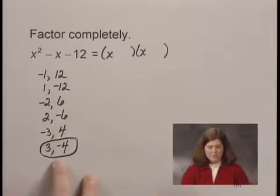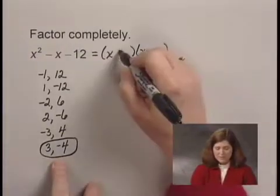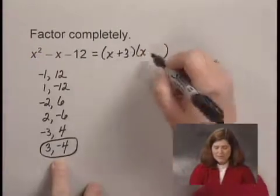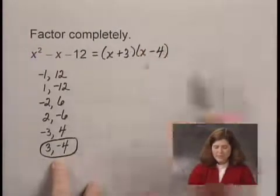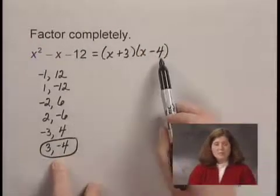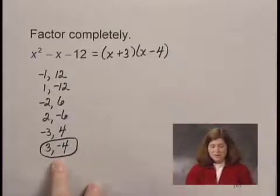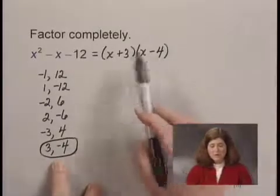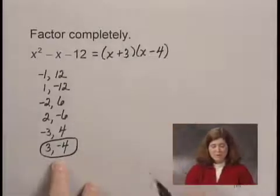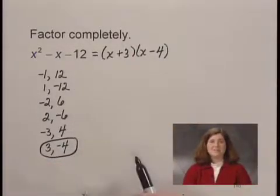So this is the pair of factors we want. So I write x plus 3 times x minus 4. I could check by multiplying these out. Since neither binomial factors further, and since their product is the original trinomial, I have factored completely.